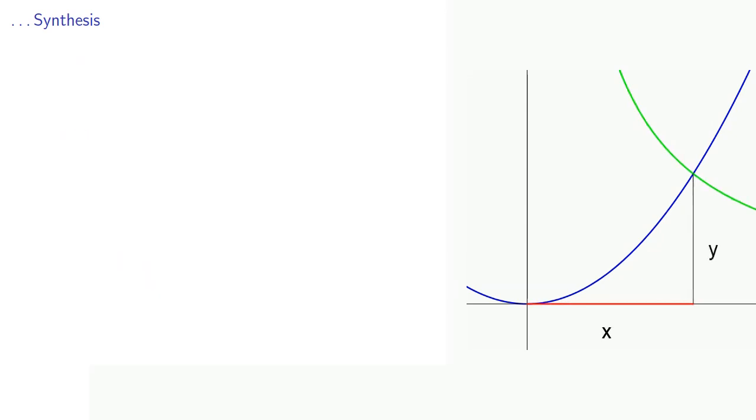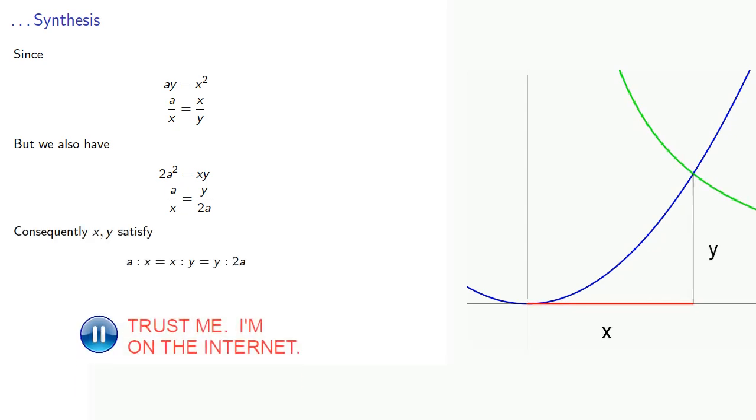And let's verify that. Since we're on the parabola, we know that ay equals x squared, and we can take this apart to the ratio a over x equals x over y. But we're also on the hyperbola, 2a squared equals xy. So again, rearranging, that tells us that a over x is y over 2a. And stringing everything together, x and y will satisfy a is to x as x is to y as y is to 2a. And we've inserted two mean proportionals between a and 2a, which solves the problem of duplicating the cube.